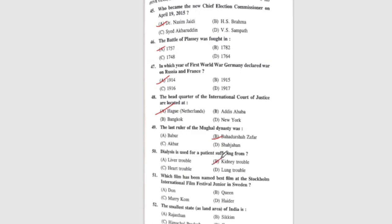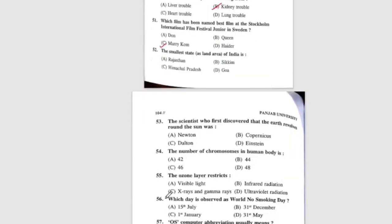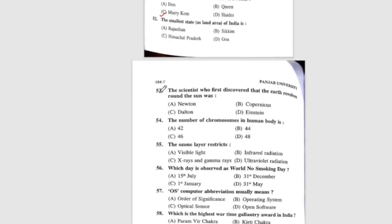Question 51: Which film has been named best film at the Stockholm International Film Festival Junior in Sweden 2015? Question 52: The correct answer is D, Goa. Question 53: The scientist who discovered that the earth revolves around the sun was — the correct answer is B, Copernicus.